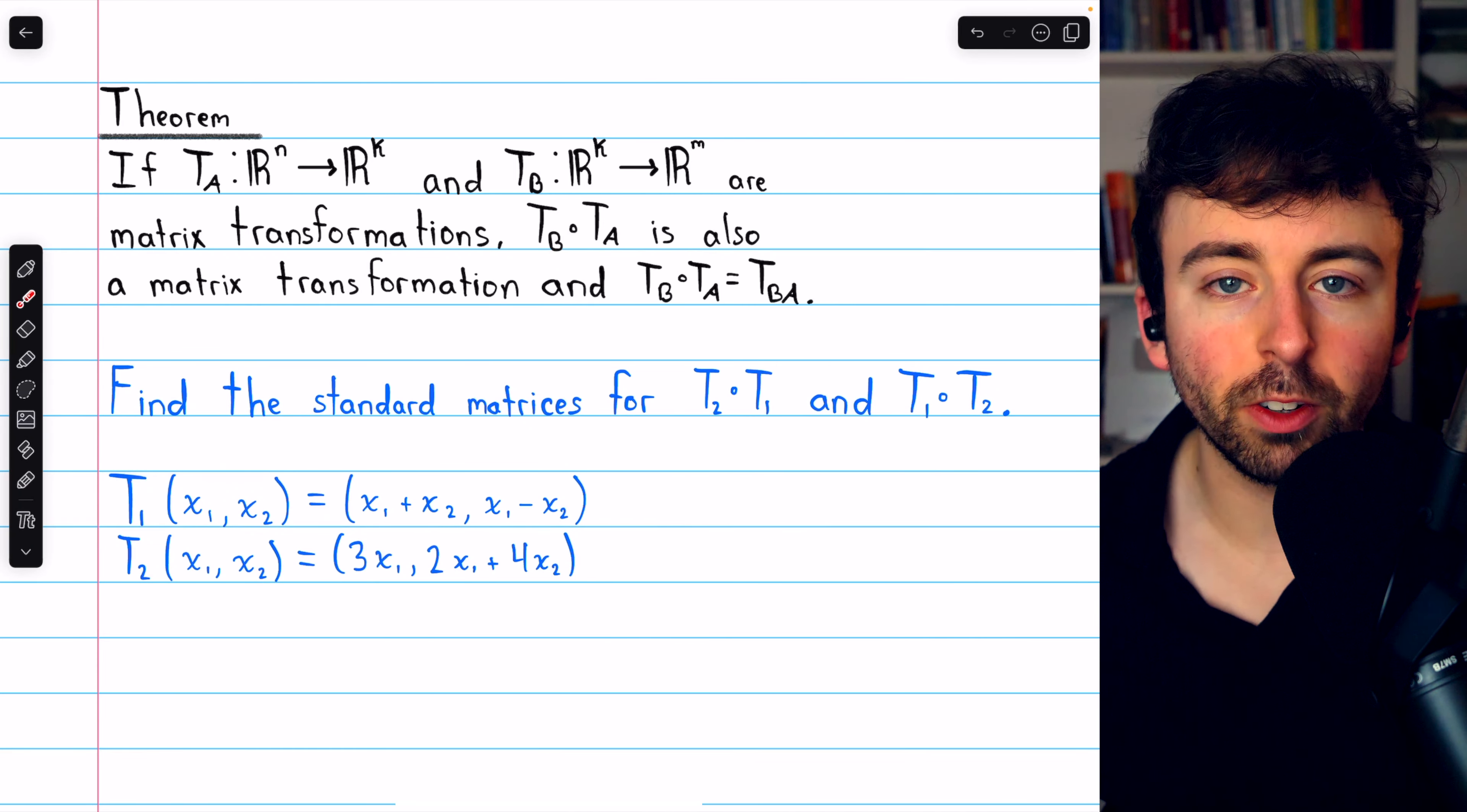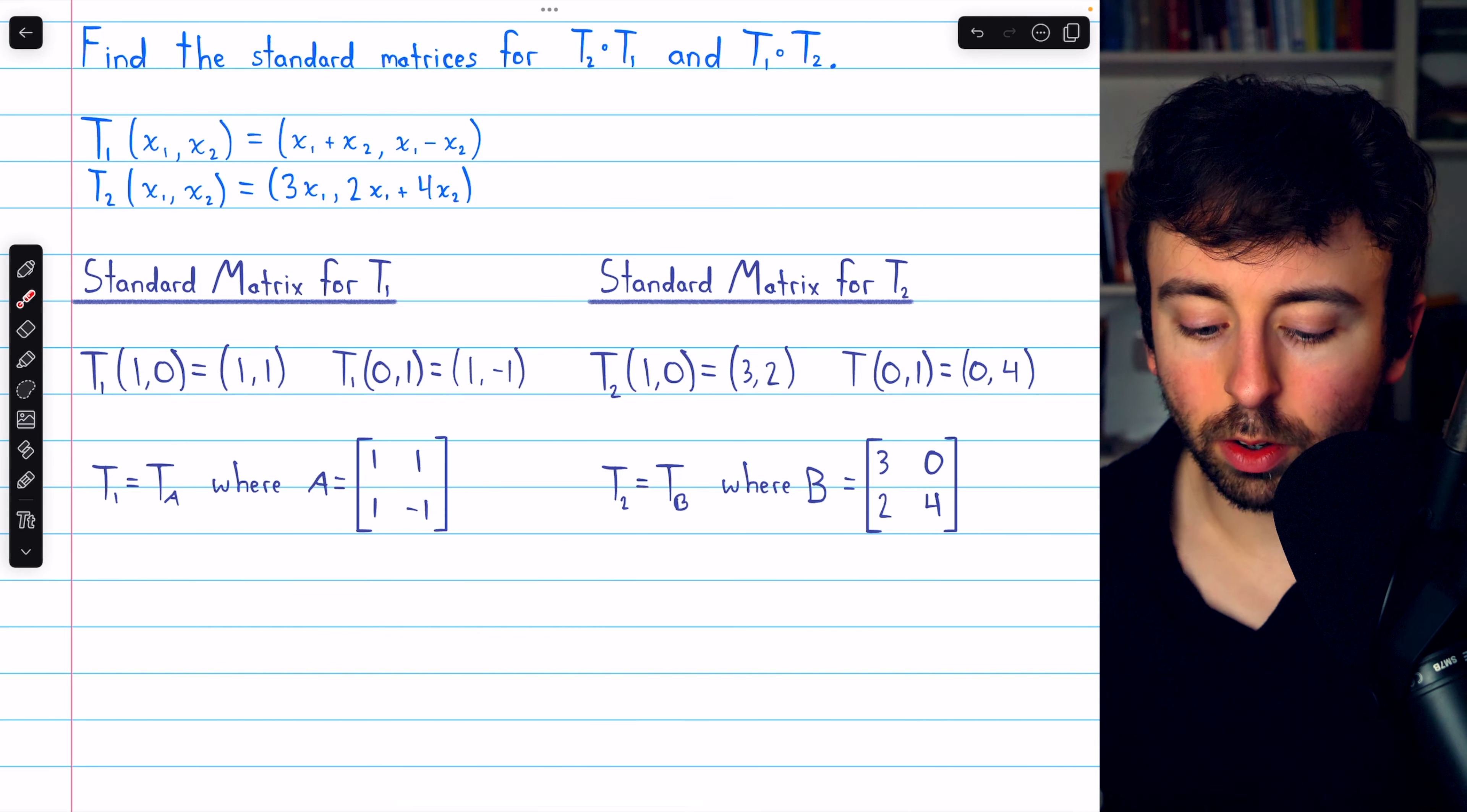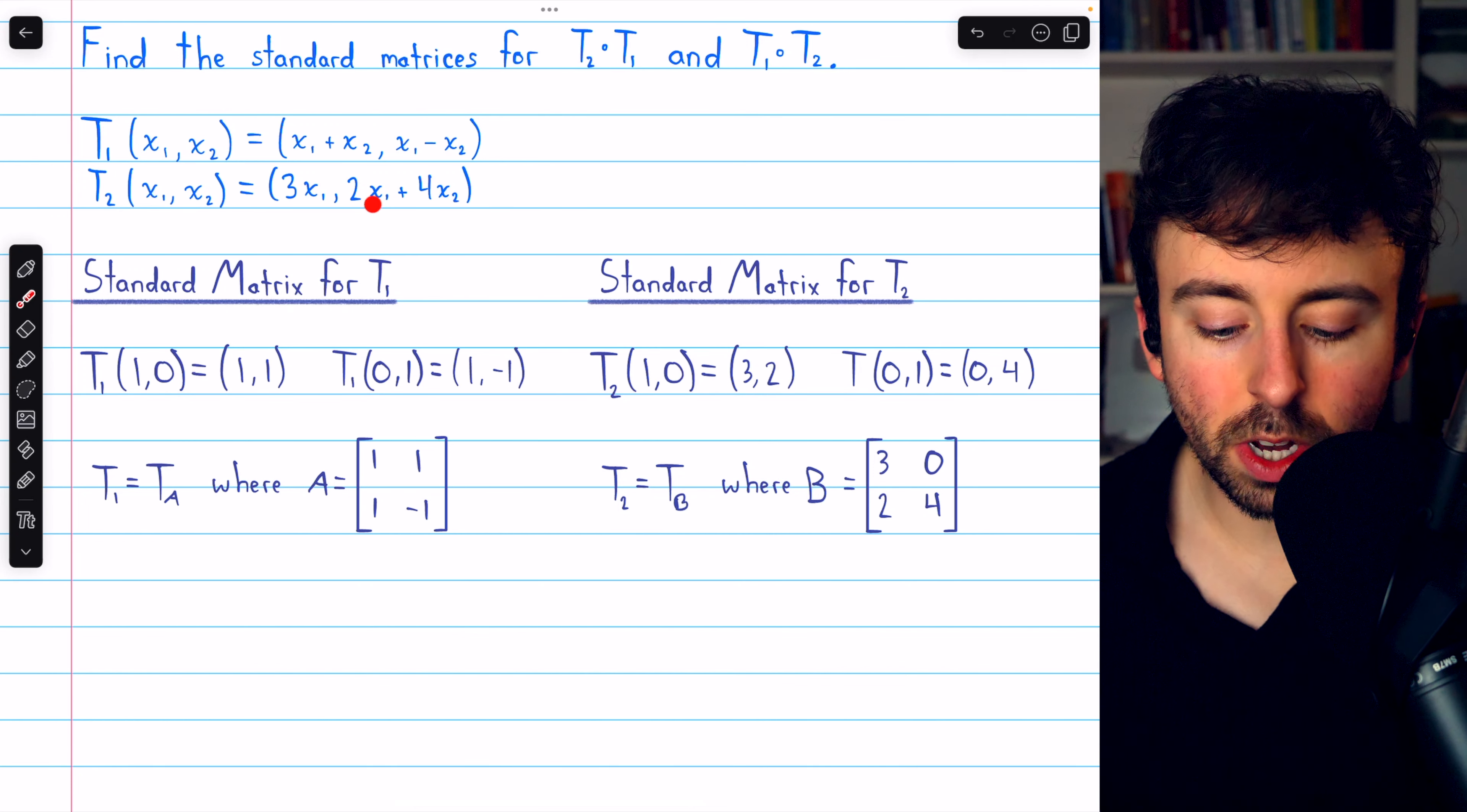In exactly the same way, we find the standard matrix for T2, taking the standard basis vectors (1,0) and (0,1), and putting them through this transformation. For example, in this first one,